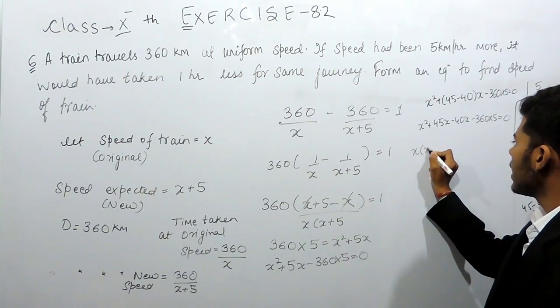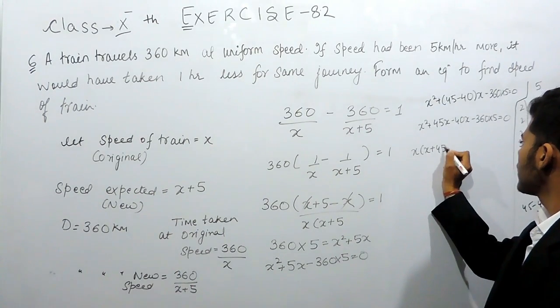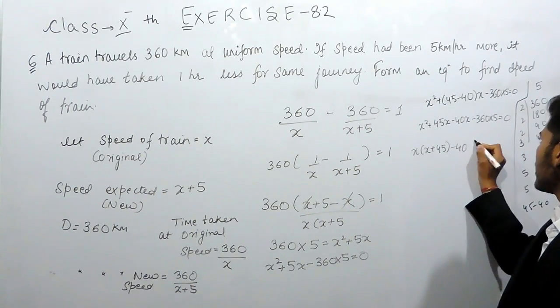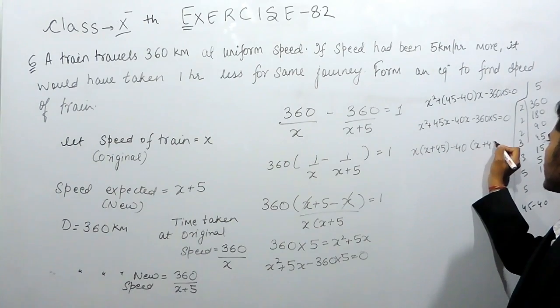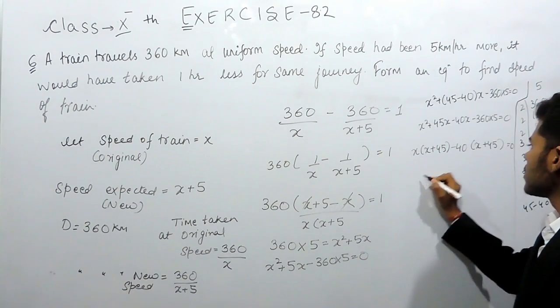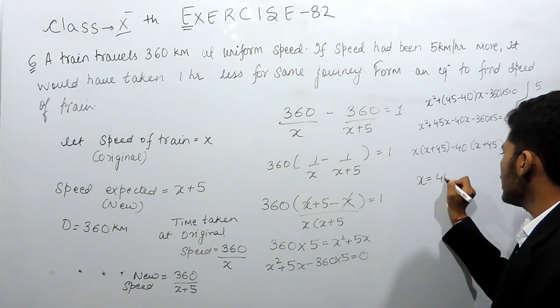X plus 45 times x plus 45 equals to 0, so the value of x will be equals to 40 and the value of x will be equals to minus 45.